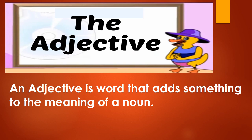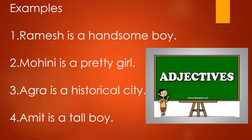They describe nouns: boy, girl, elephant, mouse, tower, film, city, town. Now take some other examples. Ramesh is a handsome boy. Mohini is a pretty girl. Agra is a historical city. Amit is a tall boy. In these sentences, handsome, pretty, historical and tall are adjectives. An adjective describes a noun.